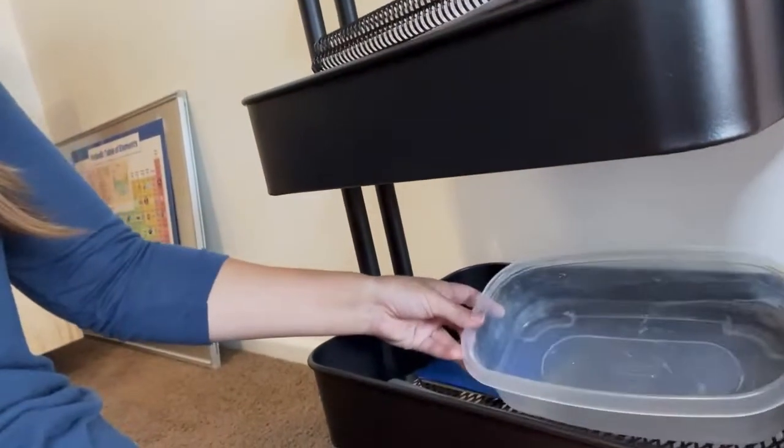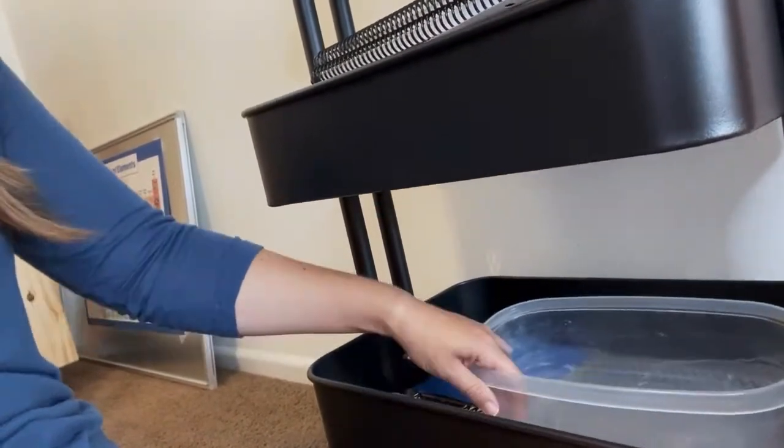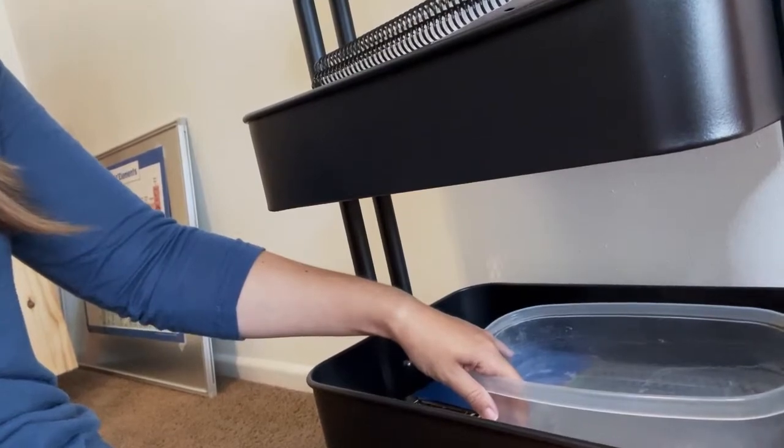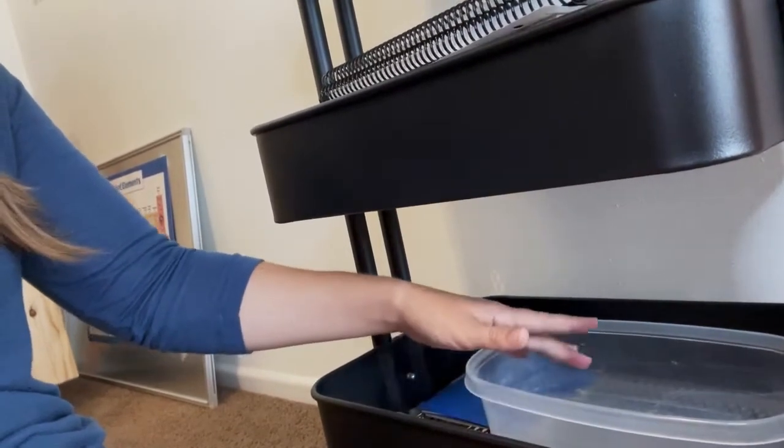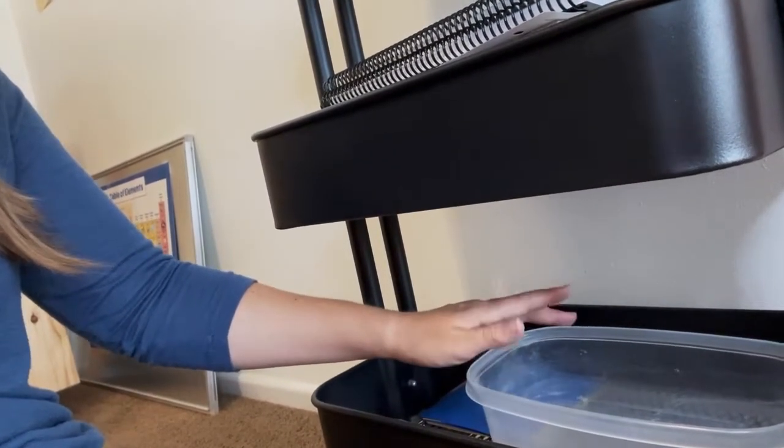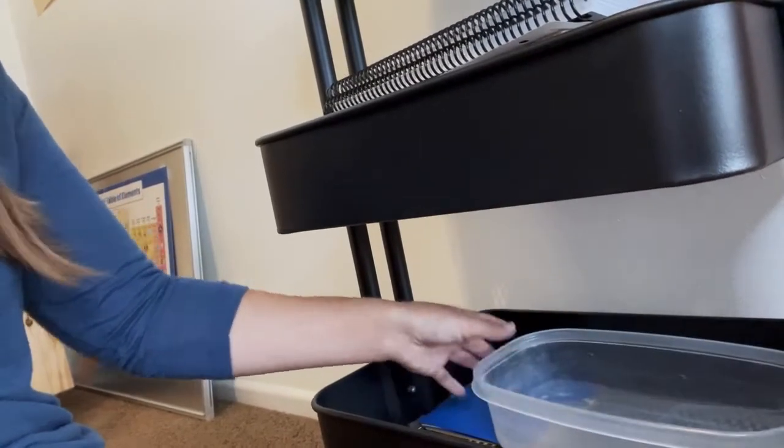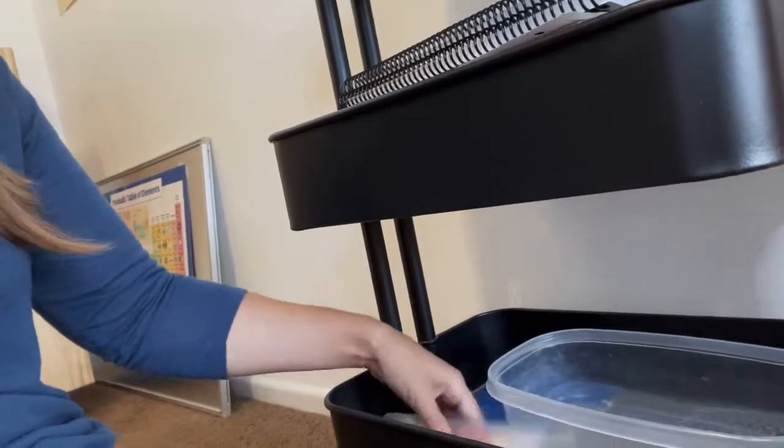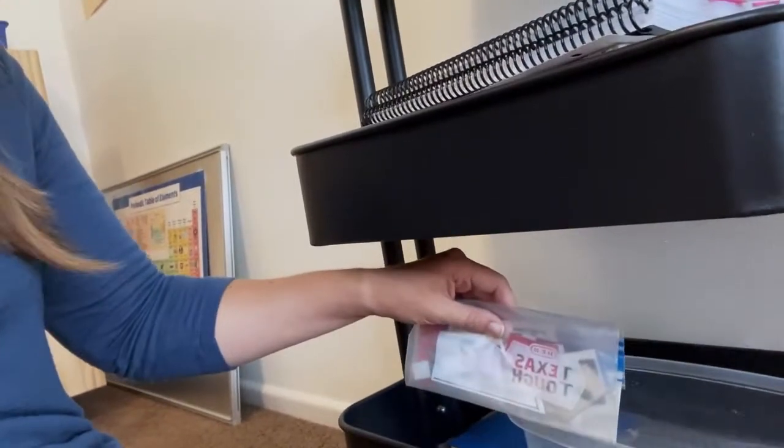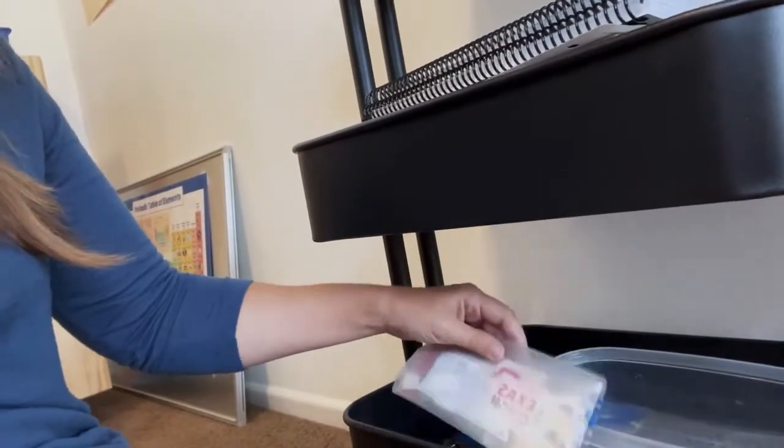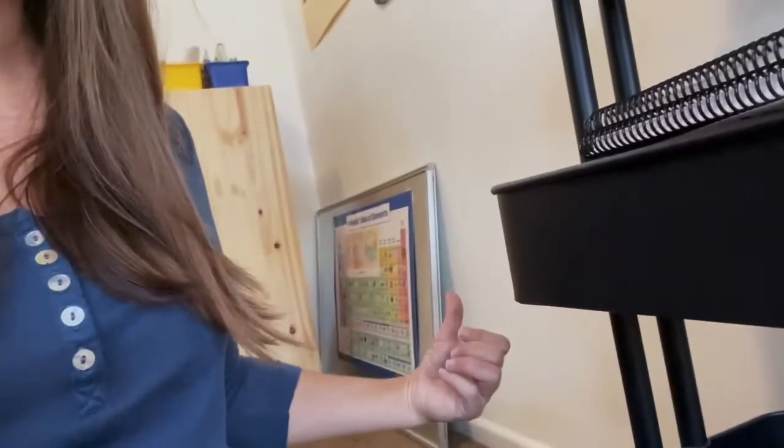And then down here I have just a little bin that I keep things that we will need for our science labs for this week. If we need food dye or certain materials I'll try to keep them in here so they're handy. And then I need to put this away actually because we're not using All About Reading anymore. But that was where I kept little things to go on the whiteboard with the letter tiles.